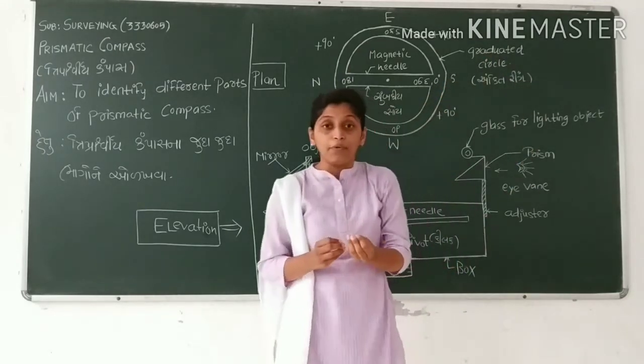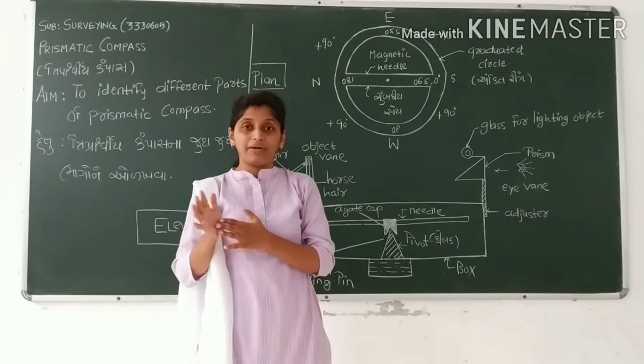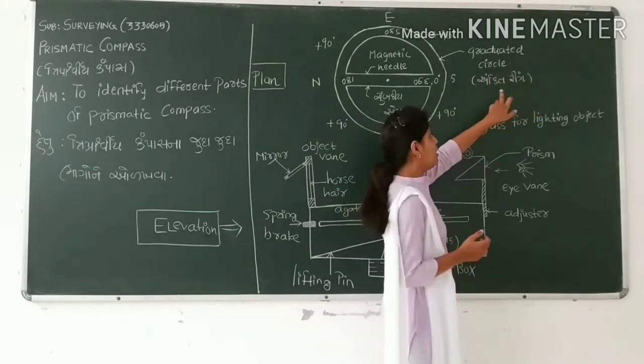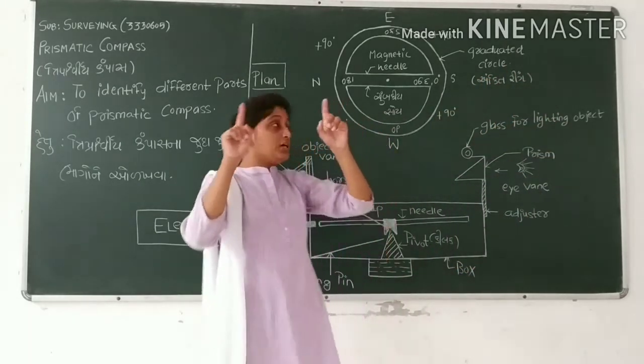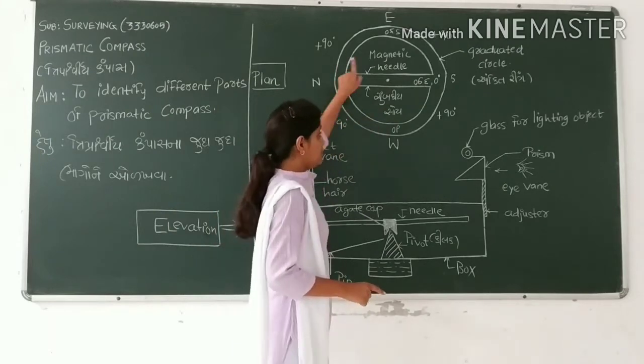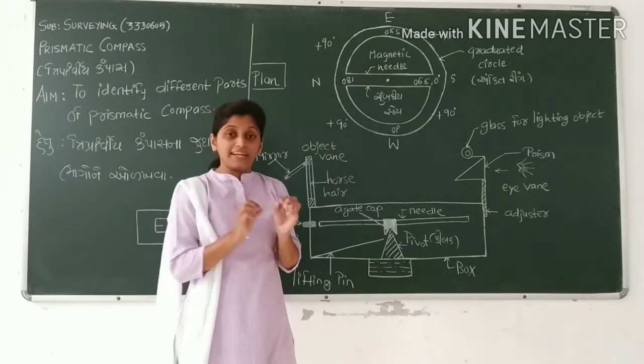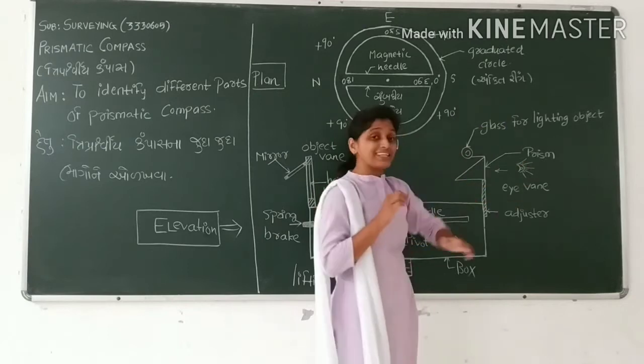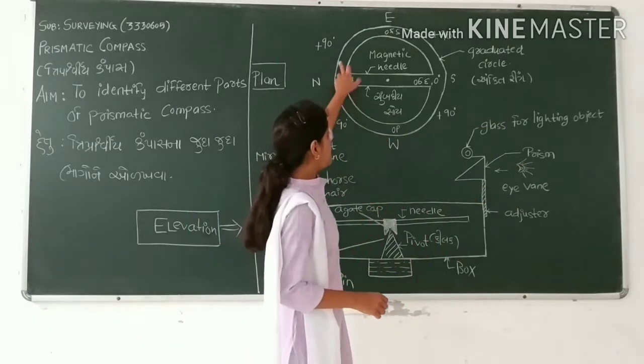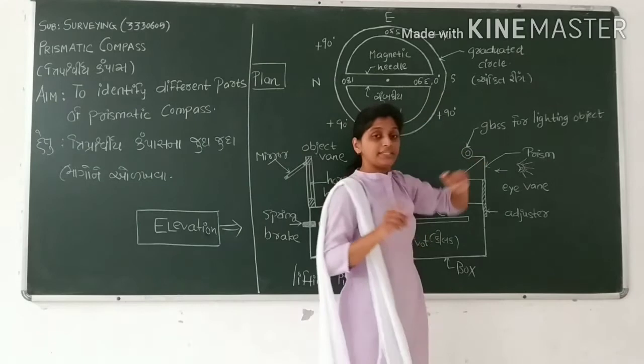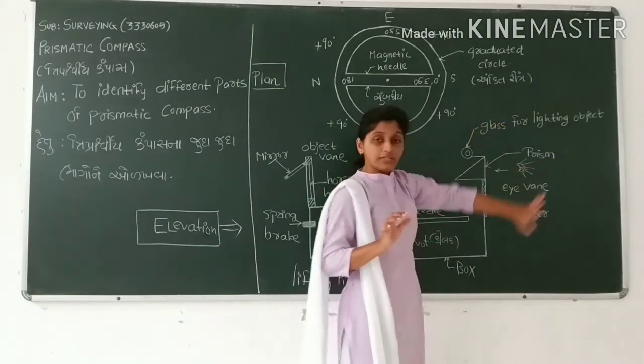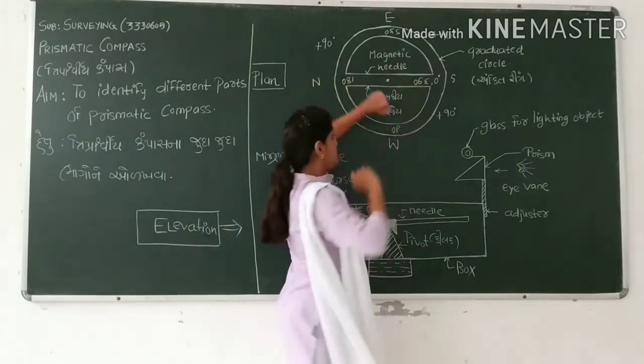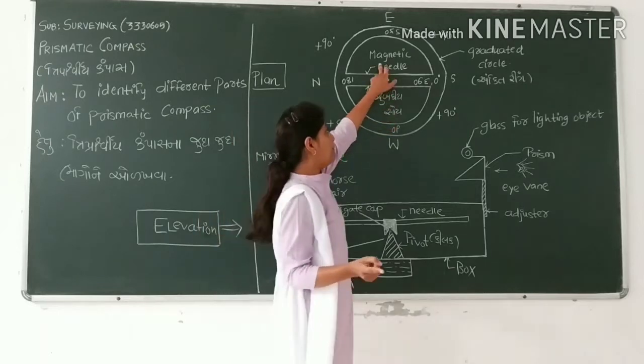It is a circle with graduations. Graduations are markings. It is like a board ring with graduates and graduation. In this experiment, the markings are graduations. This is an important part, the magnetic needle.